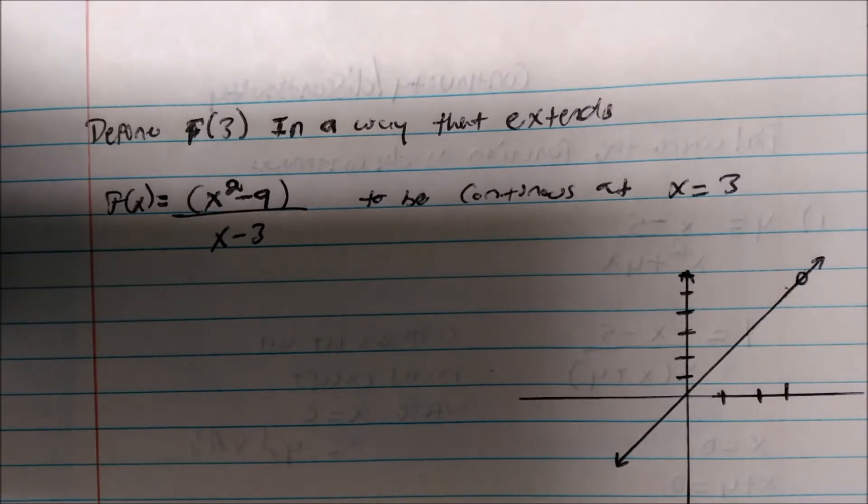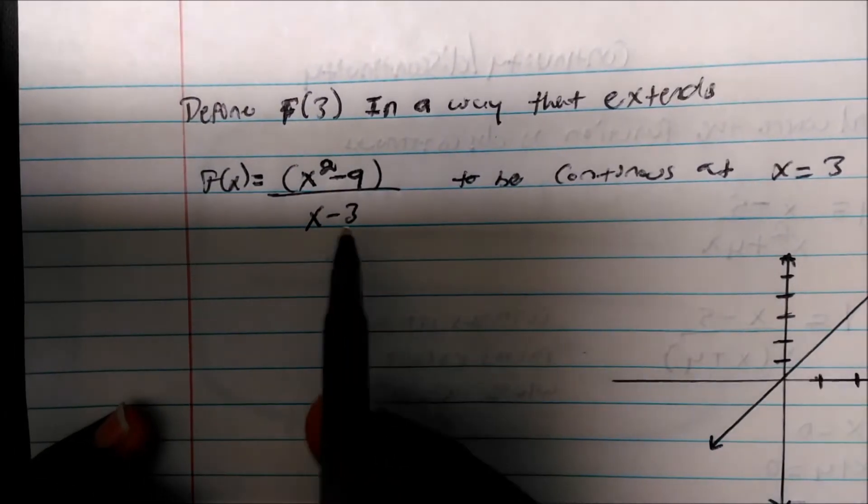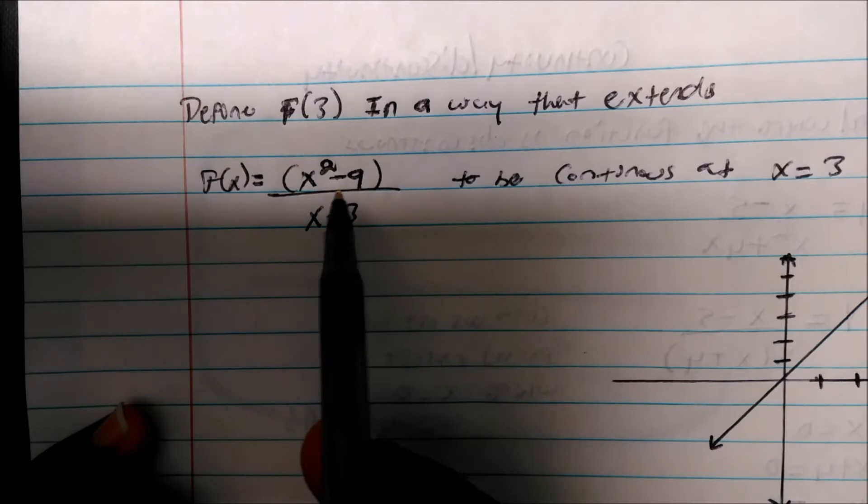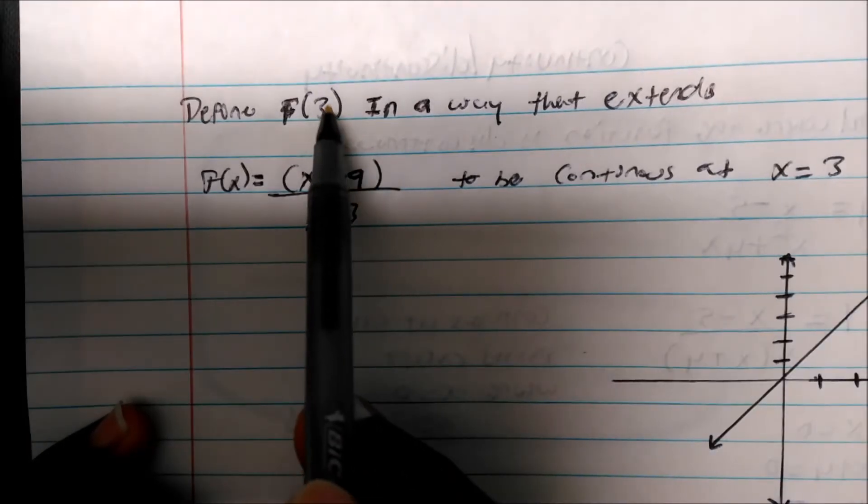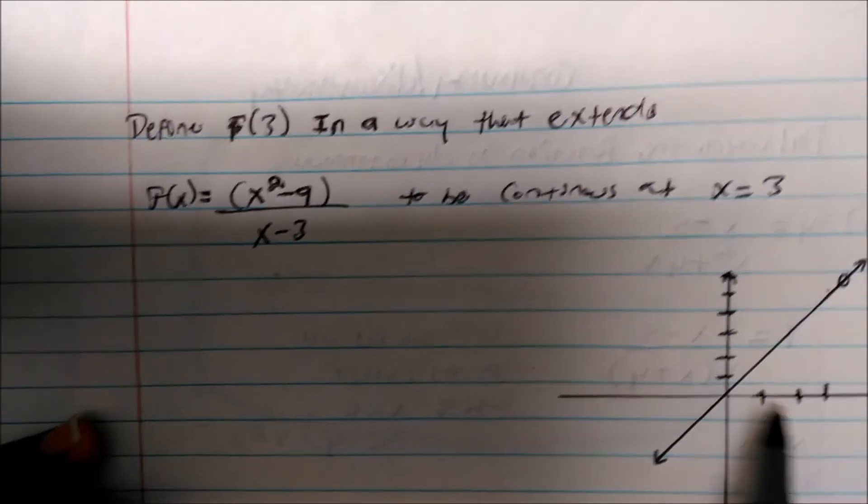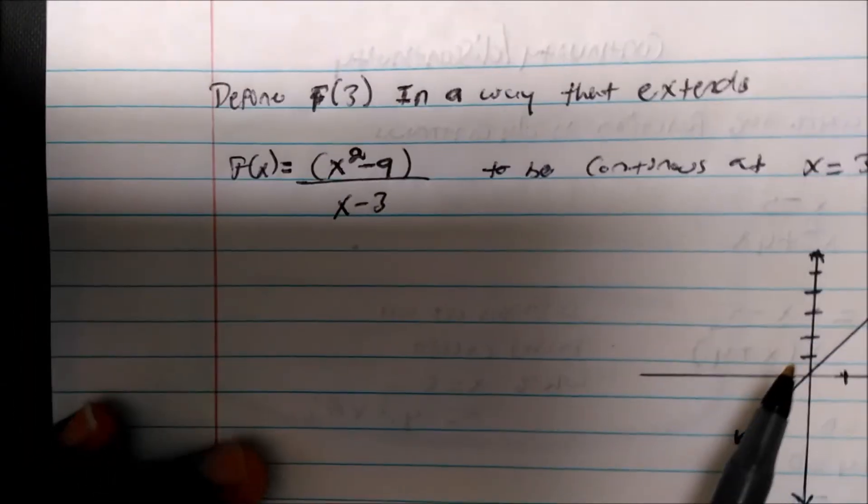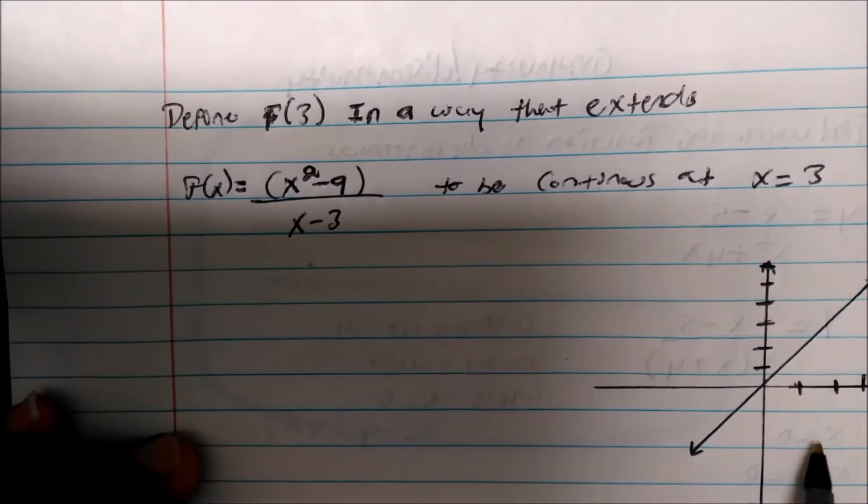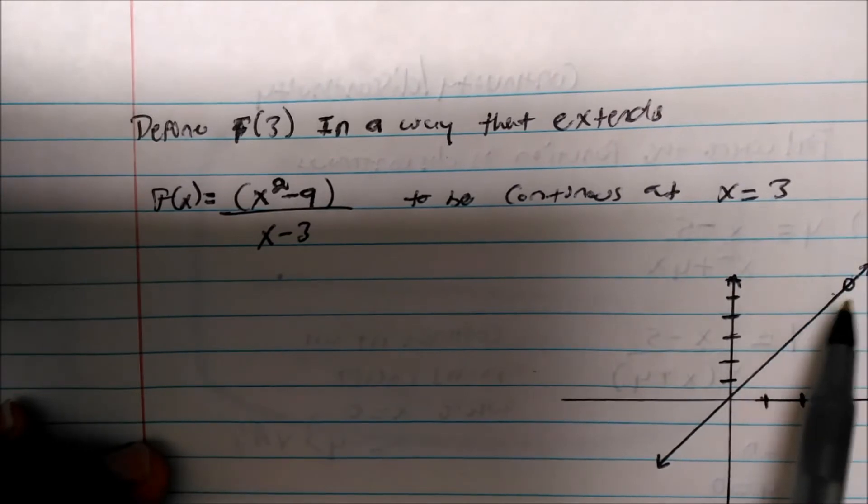So I think of piecewise. The first thing you want to do in this type of problem is find the limit as x approaches what they're asking you. If you want to be continuous where x equals 3, as you can see right now there's a removable hole there, so it's not continuous there. So you want to find the limit as x approaches 3 so you could plug in that point to make this continuous.